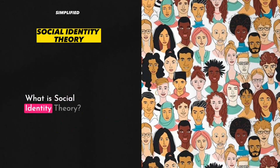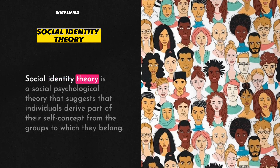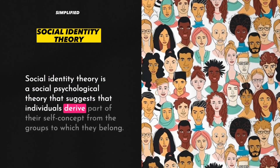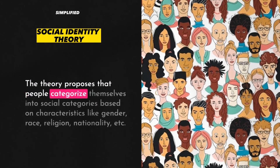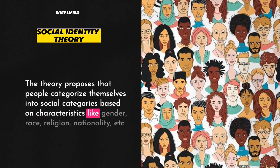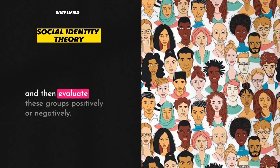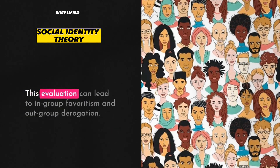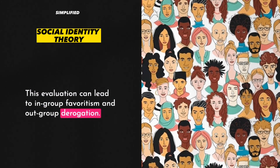1. What is Social Identity Theory? Social Identity Theory is a social-psychological theory that suggests that individuals derive part of their self-concept from the groups to which they belong. The theory proposes that people categorize themselves into social categories based on characteristics like gender, race, religion, nationality, etc., and then evaluate these groups positively or negatively. This evaluation can lead to in-group favoritism and out-group derogation.